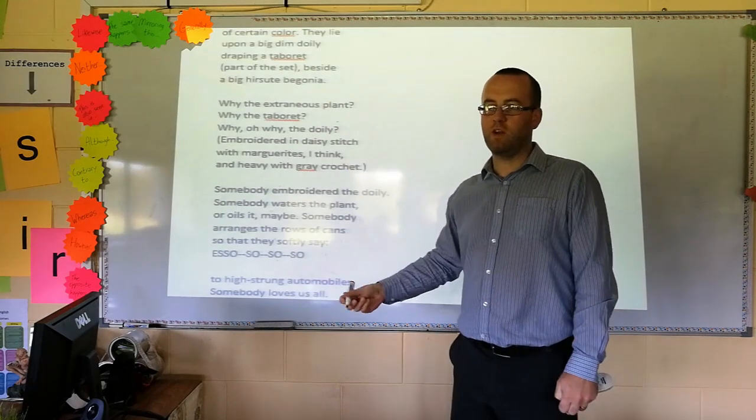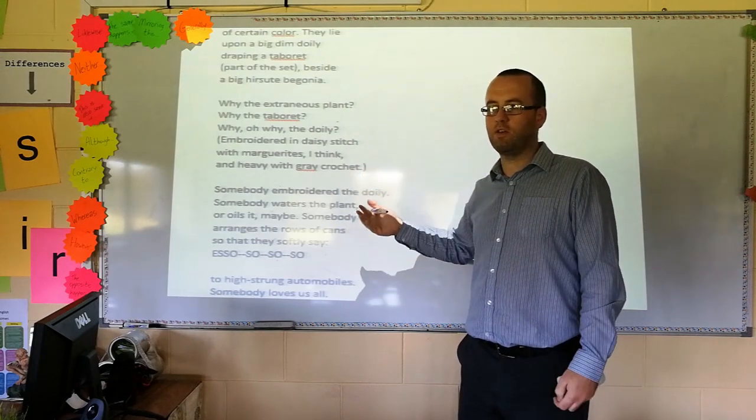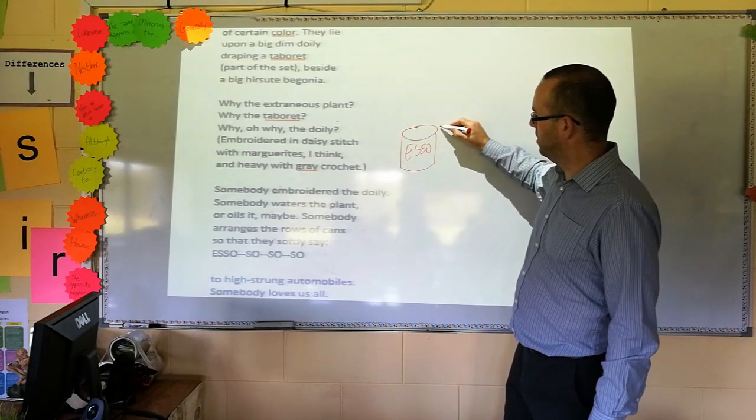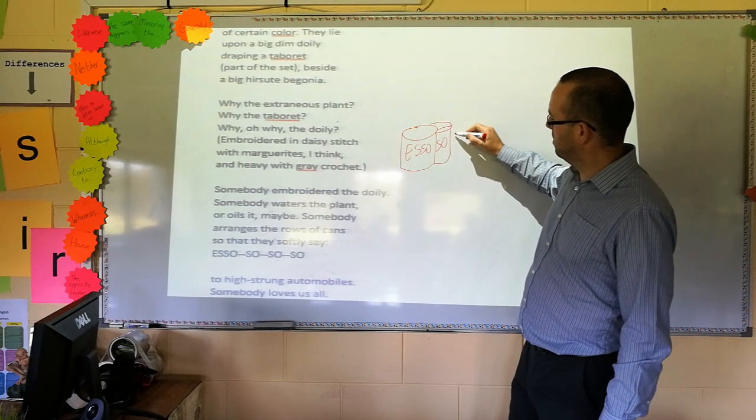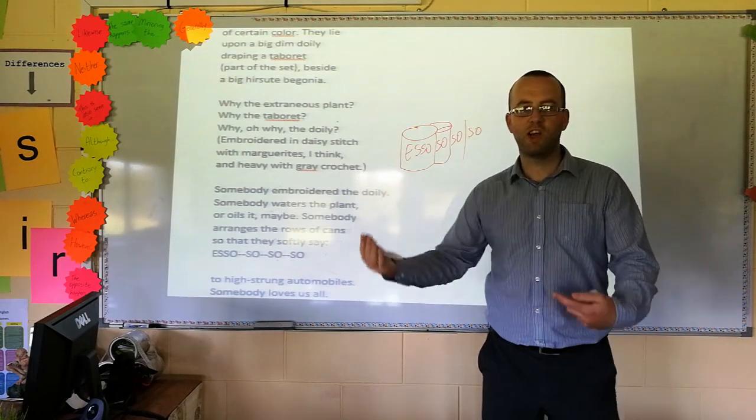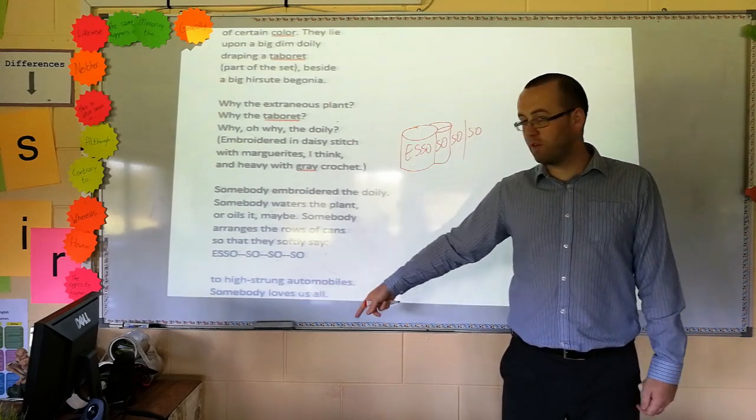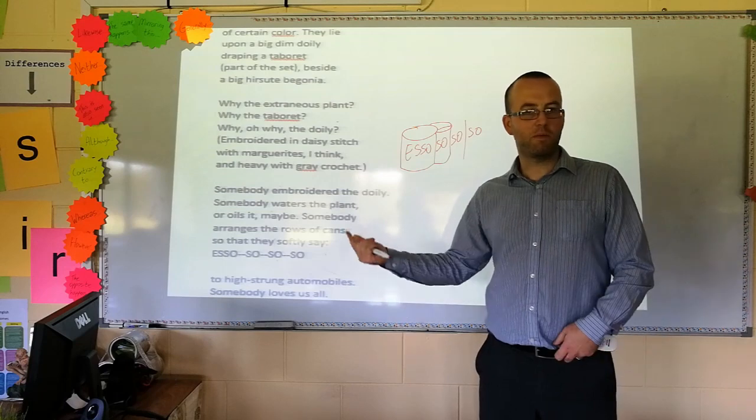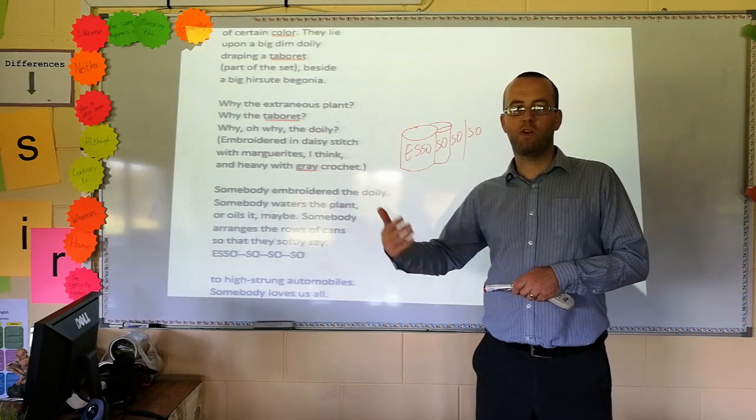Elizabeth Bishop, here, is noticing this isn't the touch of the dirty guys who work there. This is someone else. She notices that there's someone actually arranging cans of oil. Imagine that's one can of oil. Someone is arranging them in such a way... Oh god, I can't draw. That they suddenly start saying, so, so, so, to highly strung automobiles. It's almost as if the cans of oil are trying to relax some of the broken cars, maybe, that might come in. And she comes to her final conclusion. Somebody loves us all. Even these dirty, horrible people who live there in the petrol station. Somebody even loves those guys. So, if there's hope for those guys, maybe there's hope for Elizabeth Bishop. Maybe there's hope for us.